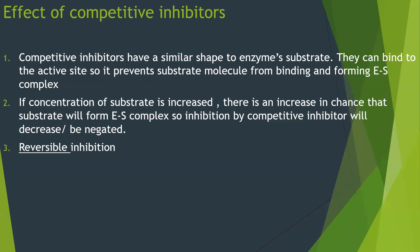Inhibitors can be competitive or non-competitive. Competitive inhibitors have a similar shape to the substrate, so they compete with the substrate molecule to bind at the active site, preventing the enzyme-substrate complex from forming. However, if you increase the concentration of the substrate, there is an increased chance that the substrate will form the enzyme-substrate complex, so the effect of the competitive inhibitor is reduced or negated. This is known as reversible inhibition.